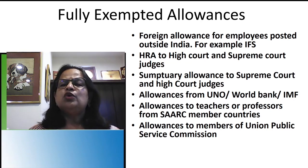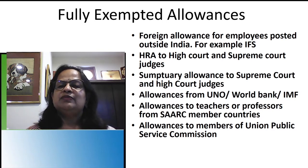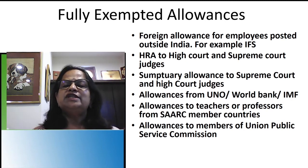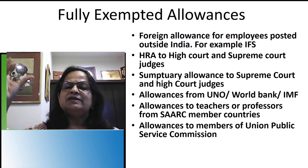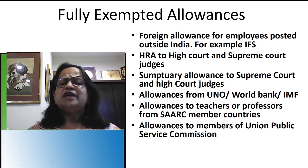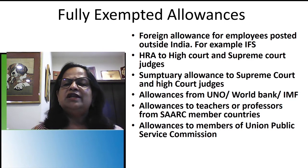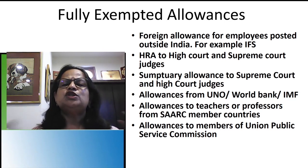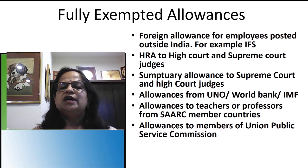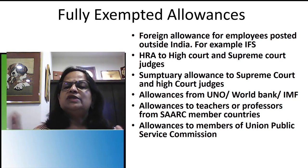Third, sumptuary allowances to Supreme Court and High Court judges. Judges receive extraordinary benefits — police escort, red signal board, orderly, fully furnished bungalow, servants, cook, provisions, diesel, official vehicle, petrol, uniform allowance, ironing allowance — all of this constitutes sumptuary allowances and is fully exempted. Fourth, allowances from United Nations Organisation, World Bank, and IMF are completely exempted.